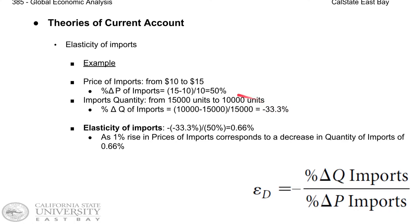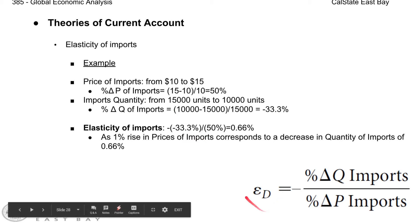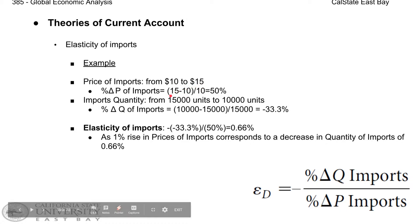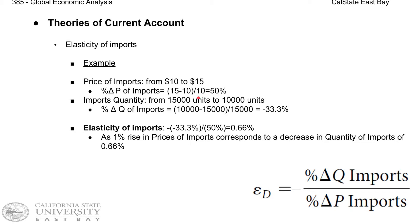In this example, what is the elasticity of demand? Well, we need to calculate the percentage change in quantity and divide that by the percentage change in price. Price increased from $10 to $15, so the change in price is 15 minus 10, which is $5. Divided by the original price gives us the percentage change in price: 5 divided by 10, so the percentage change in price is 50%.